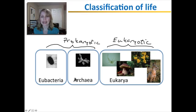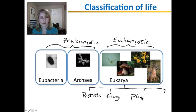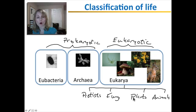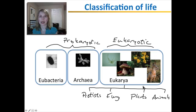Each domain can be separated into multiple kingdoms. You will learn about the kingdoms that Eukarya can be separated into: protists, fungi, plants, and animals. This four-kingdom system for the eukaryotic domain has actually been recently reorganized, mostly due to problems with classifying protists, but for now let's stick to this four-kingdom system to keep things simple.